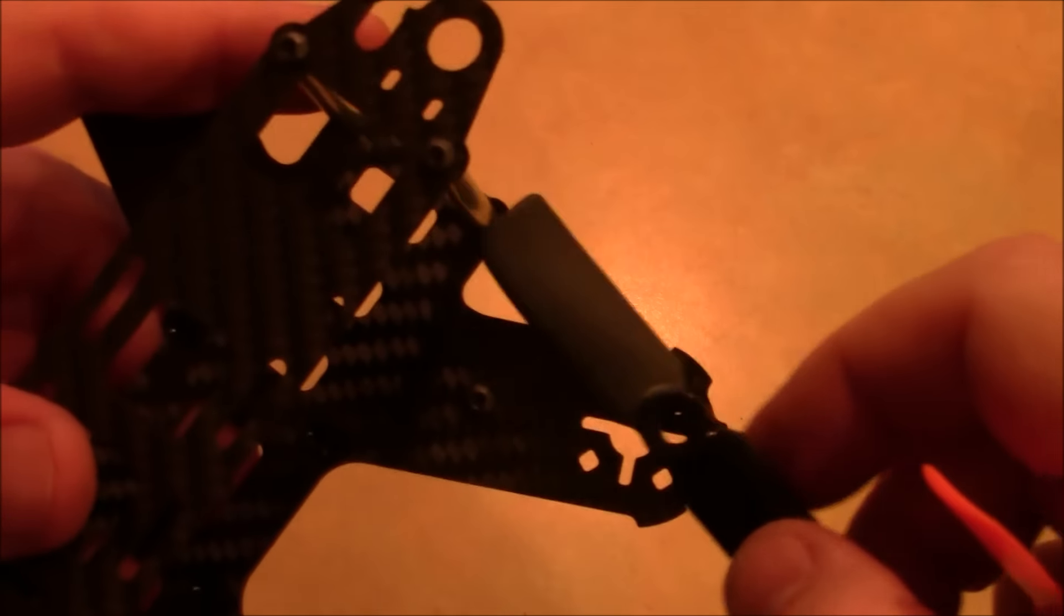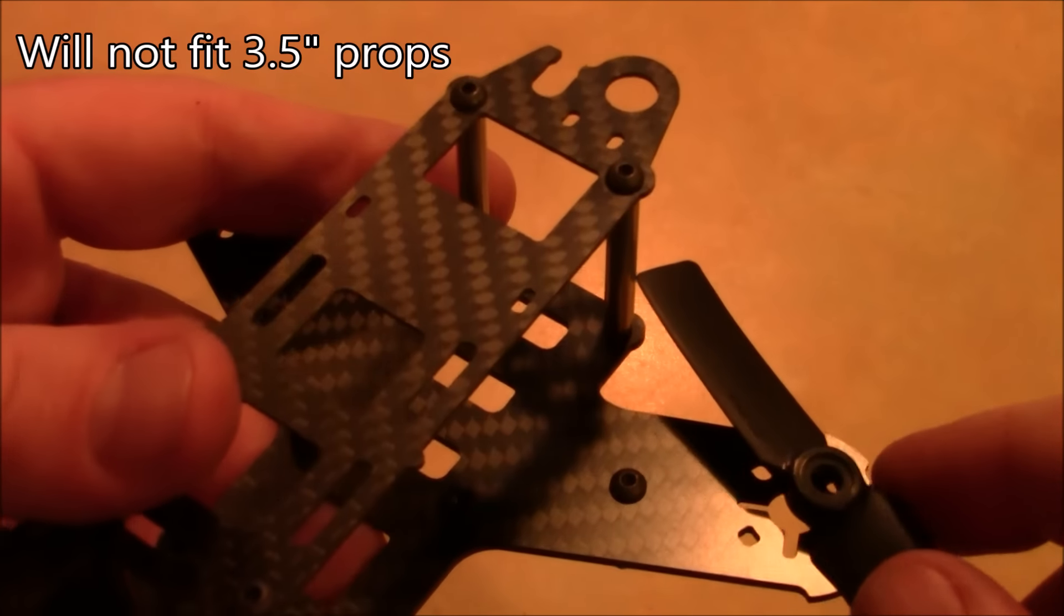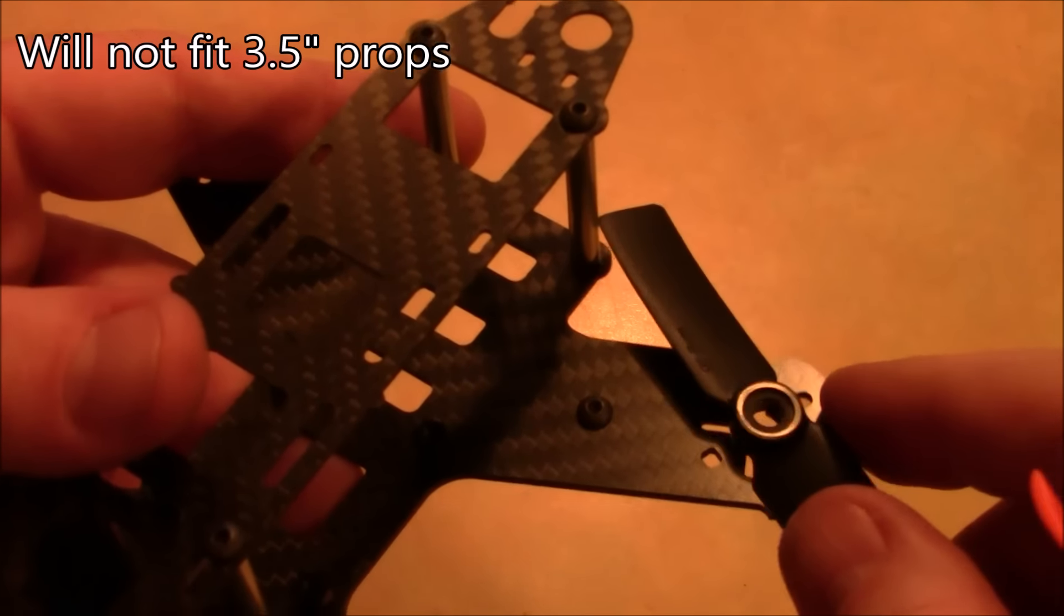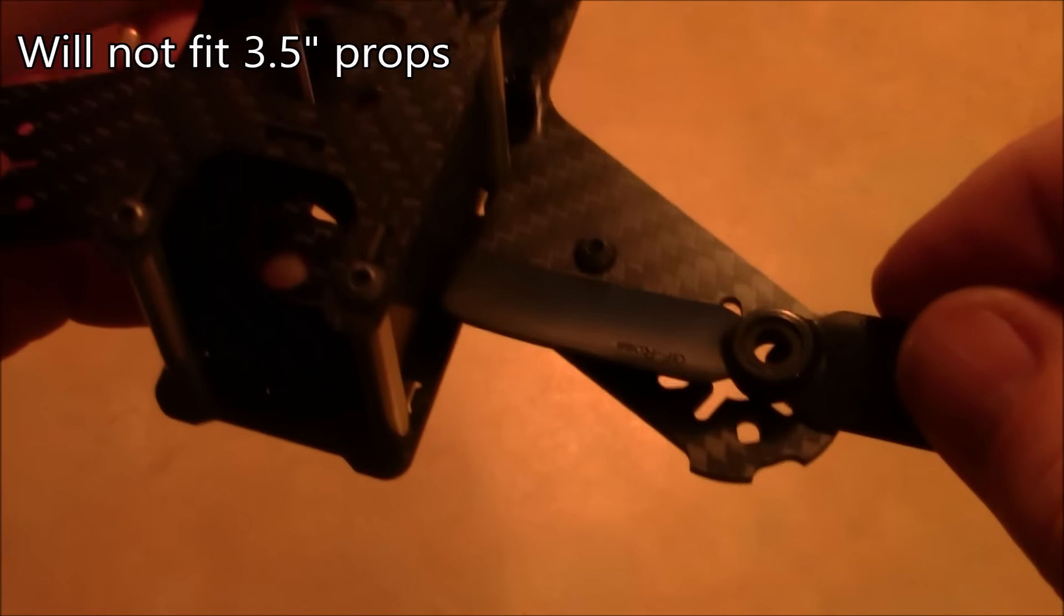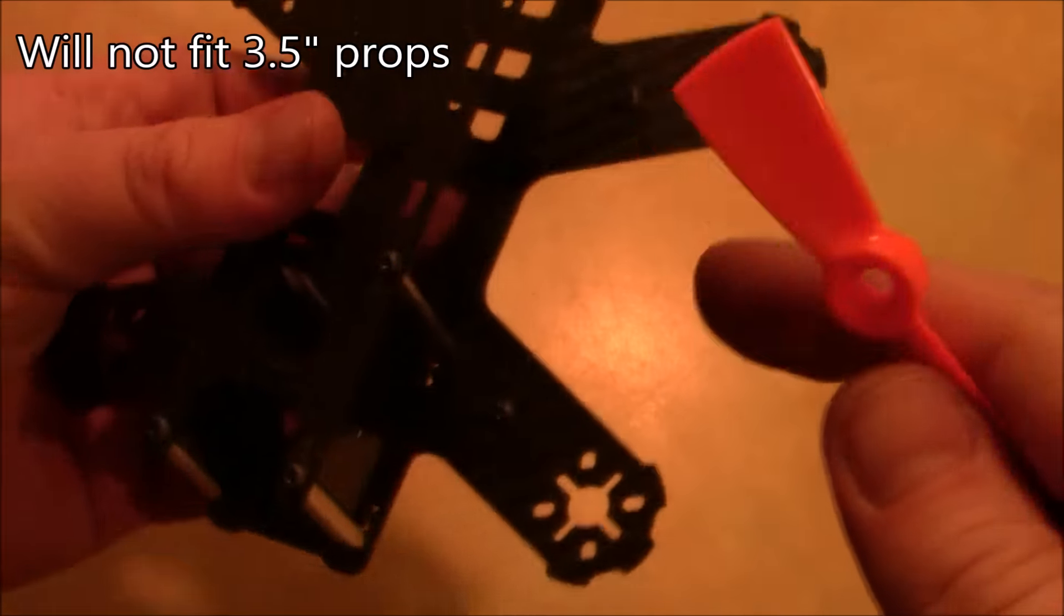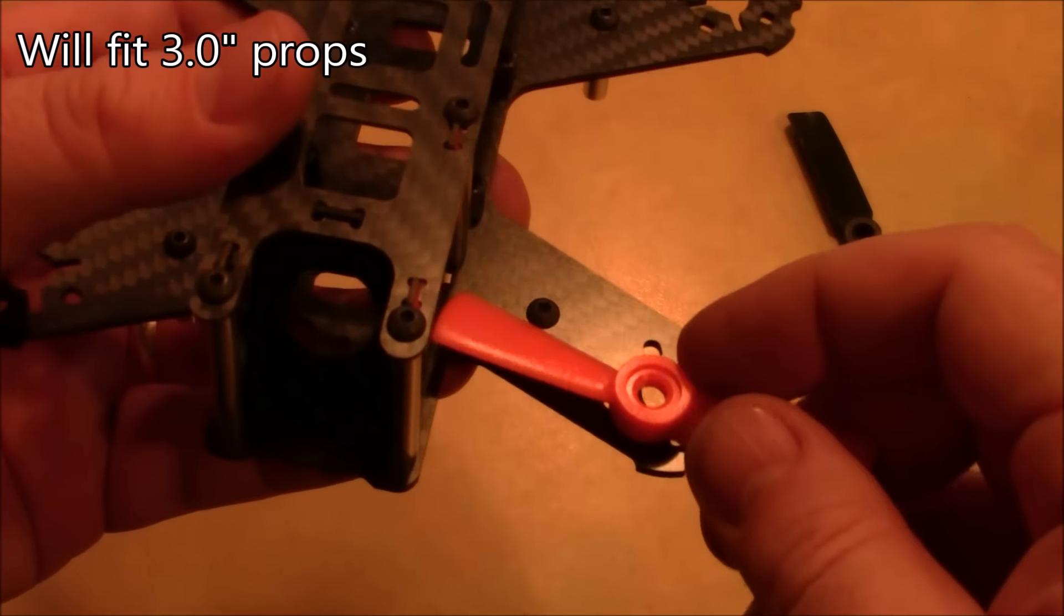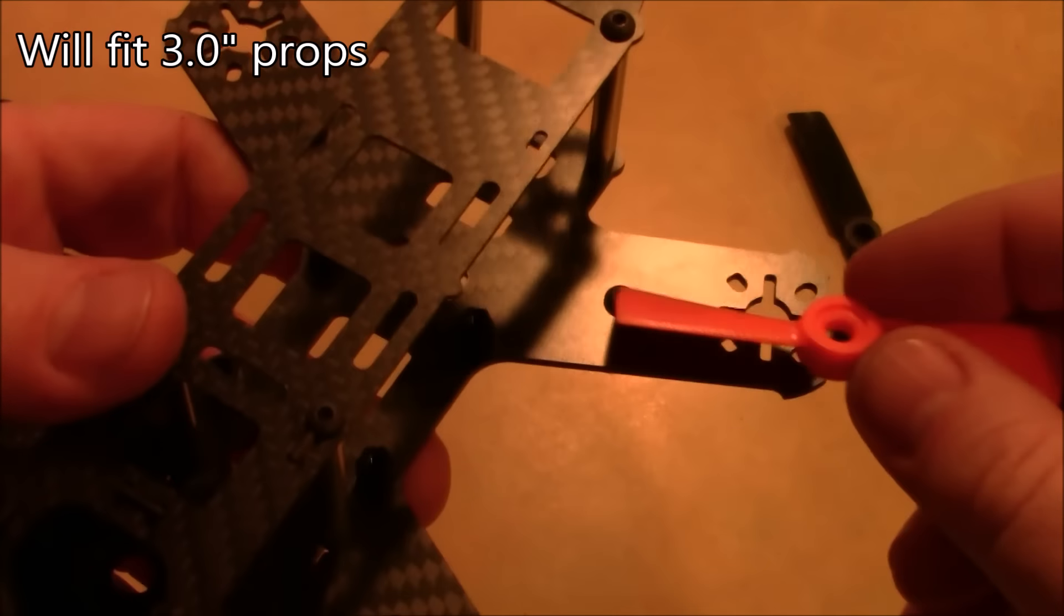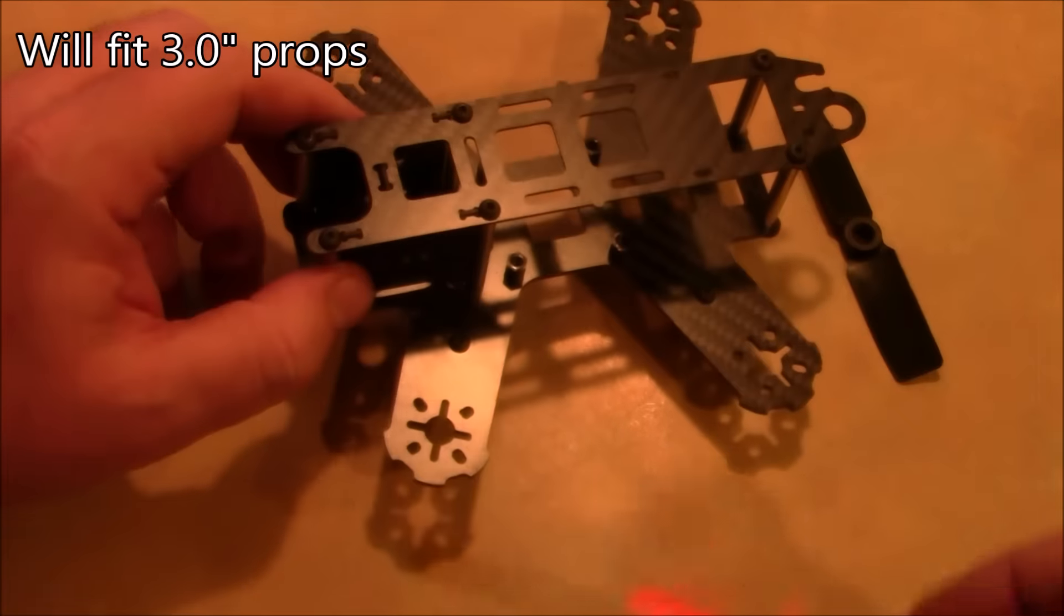This is a Diatone 3.5-inch prop. And you can see here it's not going to get past this mounting post here. Even up here in the front, you can't even get it up there close enough to center it over the hole. This is a Diatone 30-45 prop. And it spins up here just fine. It clears everything up here. It clears everything back here just fine. So a 3-inch prop would work on this.